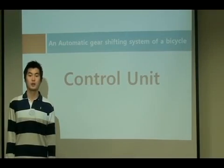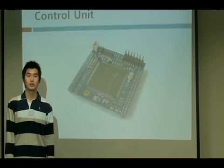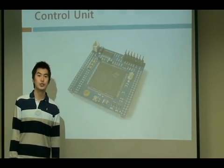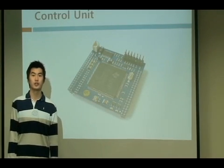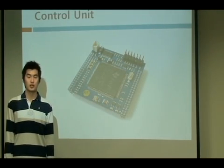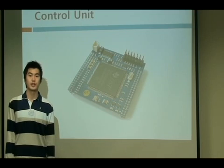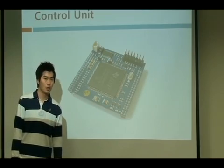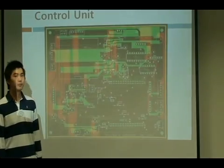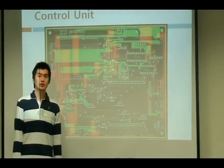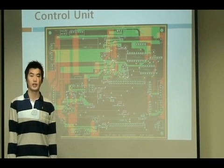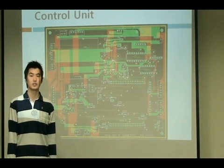The next part is about the control unit. We use a DSP — digital signal processor — as the main processor. The DSP controls two DC motors with input from the speed detecting sensors, which we just covered. We designed a PCB board to easily mount the whole circuit elements on the bicycle.